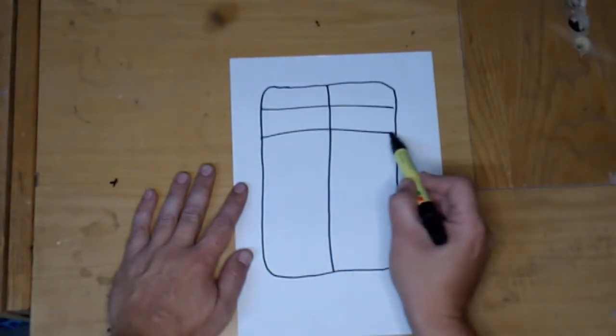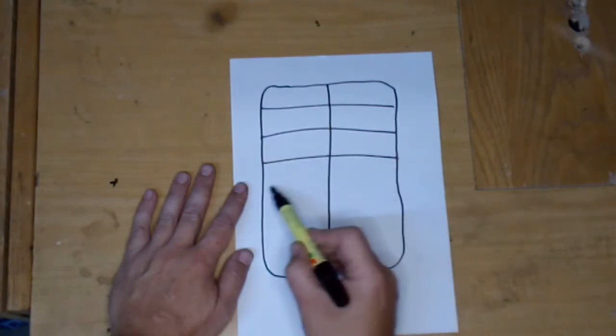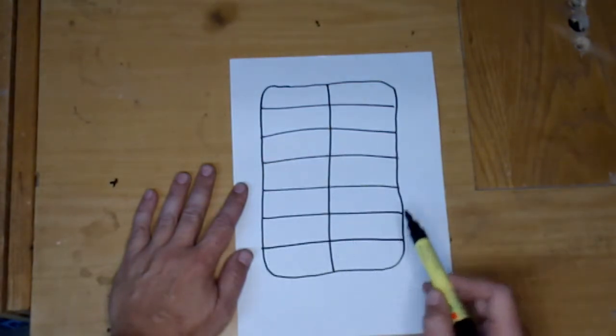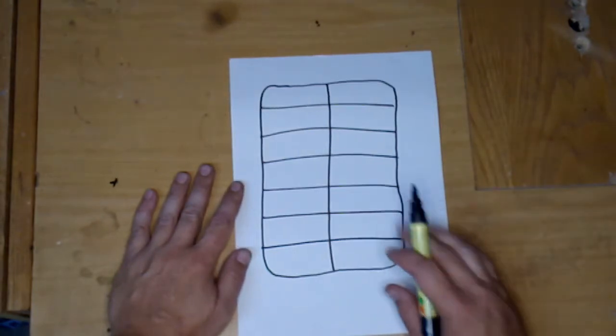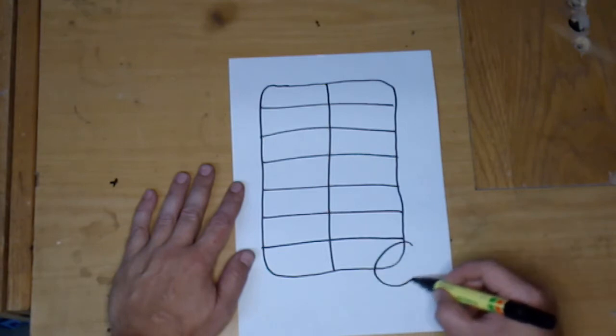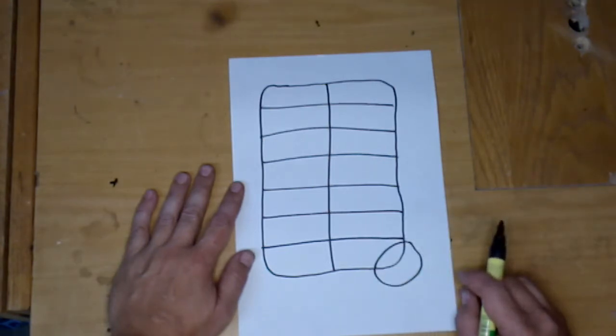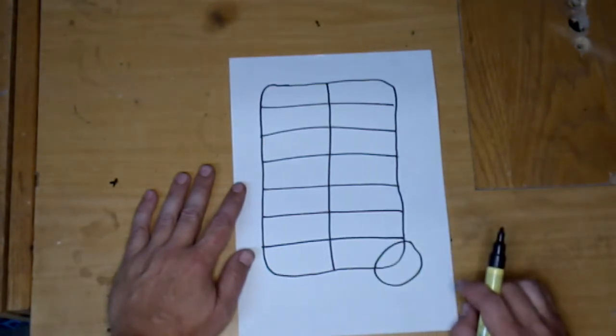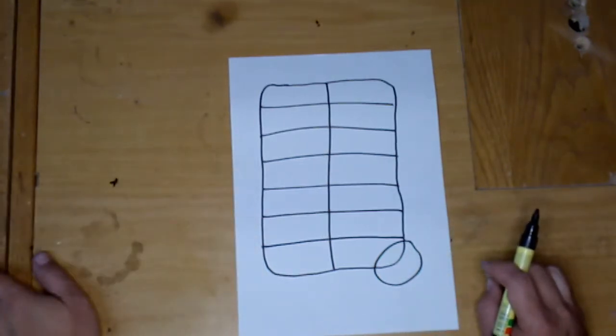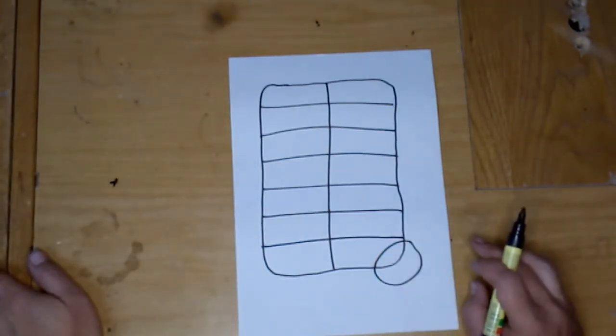And then across, a number of support beams from left to right. Now this is a fairly basic, simple design, and the biggest headache that I was facing was how to get these round corners. So I came up with a different type of idea.